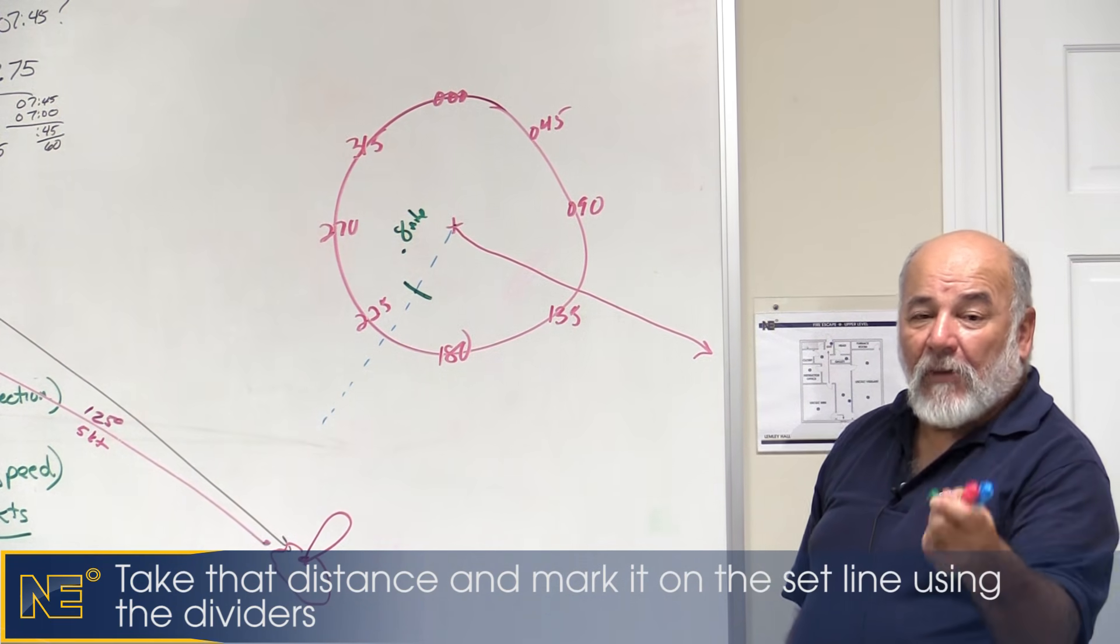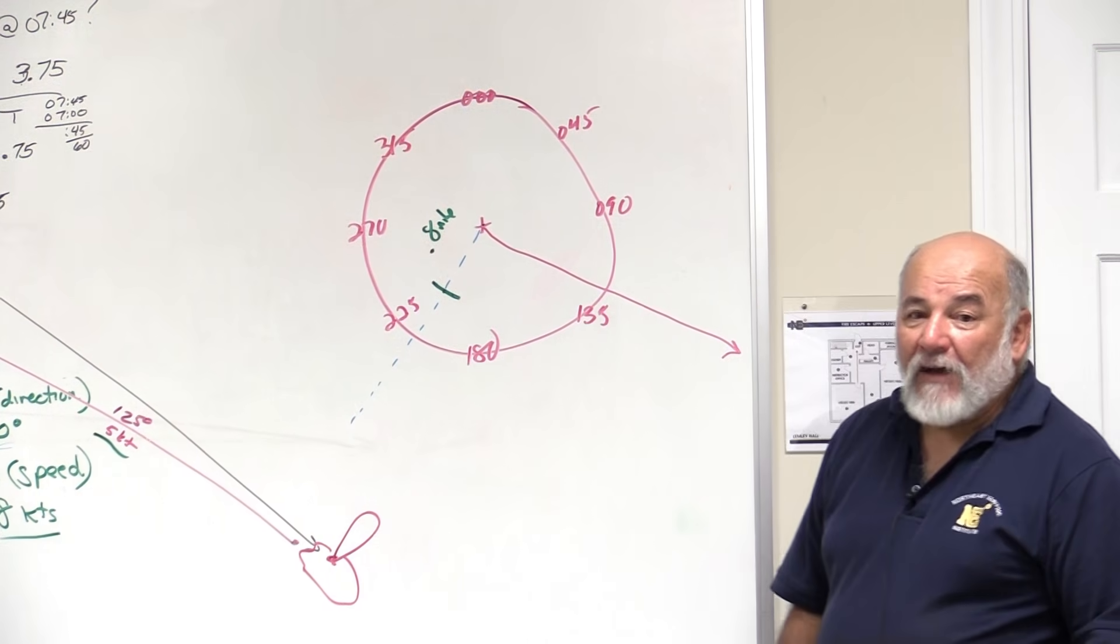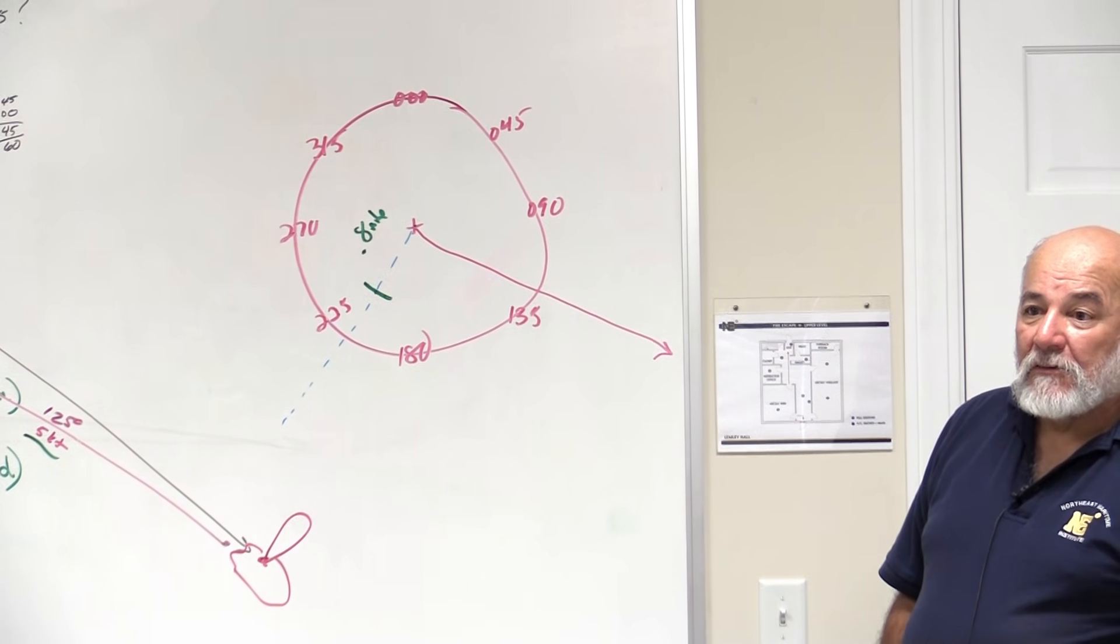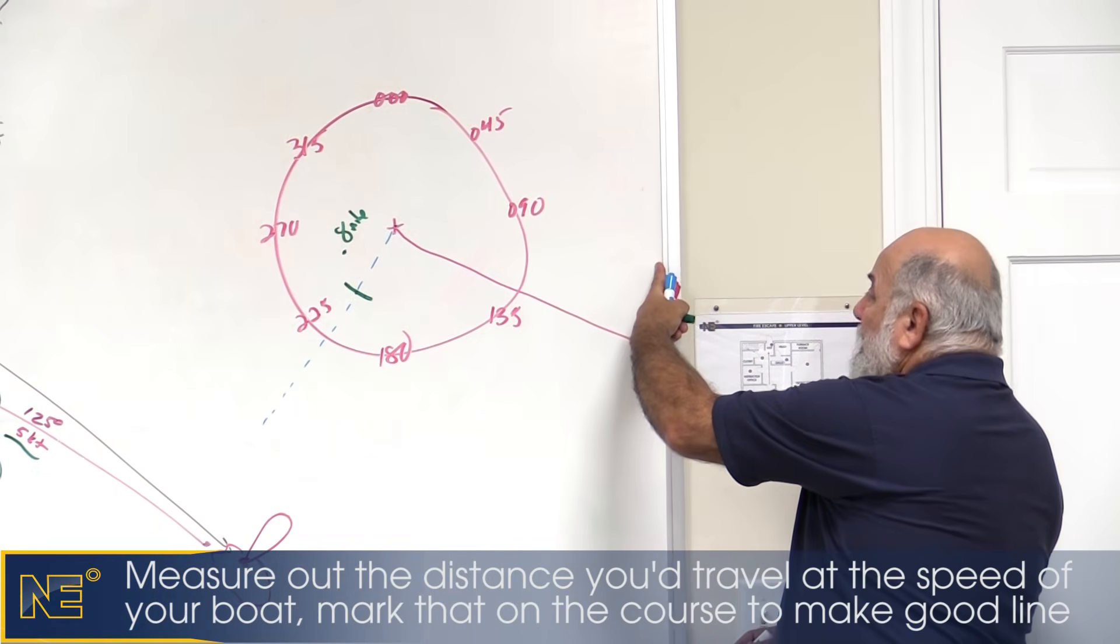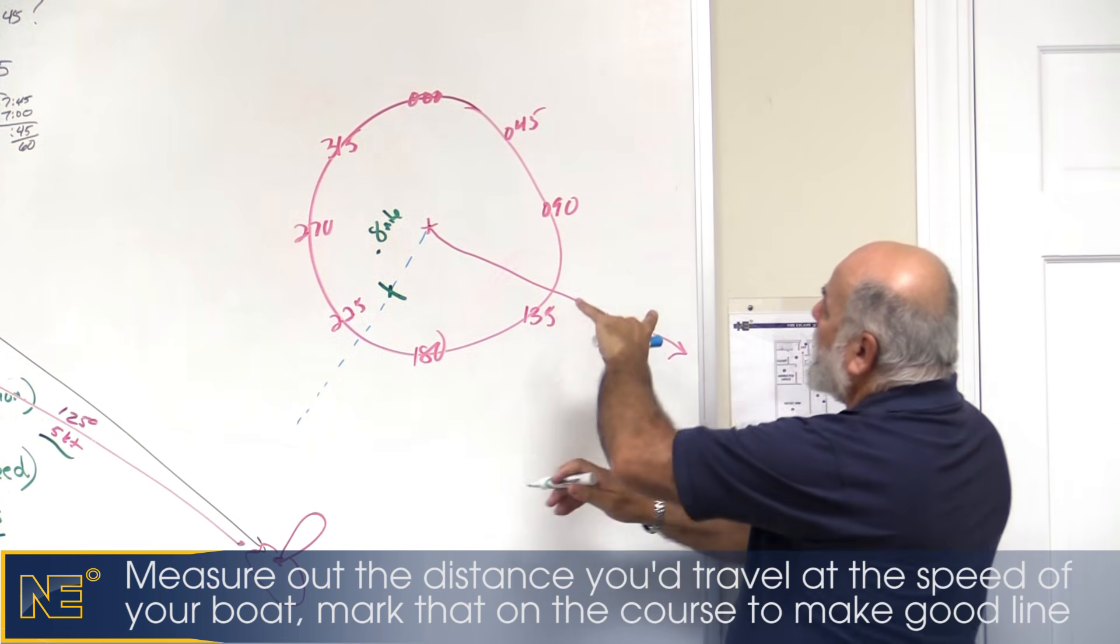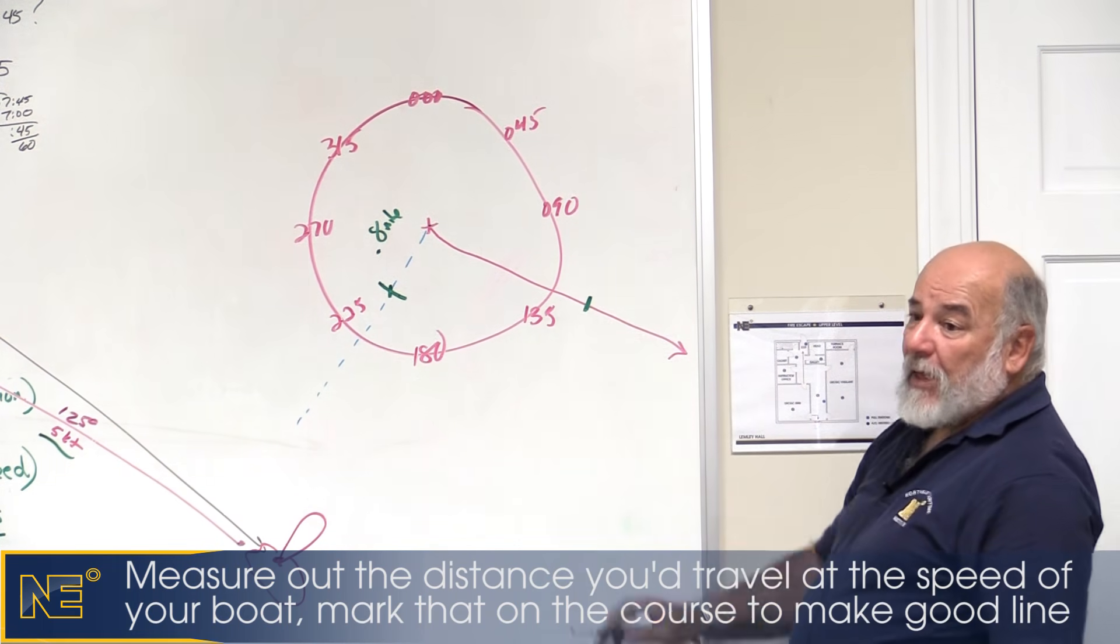How fast, what's my RPM speed? How fast am I trying to go with my vessel? Five knots. How far would I go in one hour at five knots? Five miles. I get 5 miles on my dividers, I take the pointy end, and I put the pointy end right here, and I take the other end, and I make a line on the course that I want to make good.